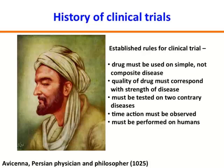Avicenna said the quality of the drug must correspond with the strength of the disease — you're not going to use a really potent drug for the common cold. He also said you have to test a drug on two different diseases to know whether it's truly effective and not just a placebo effect. You must see a time-action relationship to know it's causal, and clinical trials must be performed on humans, because there are many examples of drugs working in cell lines or animal models that don't pan out in humans. This was said back in 1025 — this man was really ahead of his time.